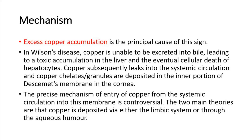In Wilson's disease, copper is unable to be excreted into bile, leading to a toxic accumulation in the liver and the eventual cellular death of hepatocytes. Copper subsequently leaks into the systemic circulation, and copper chelates or granules are deposited in the inner portion of Descemet's membrane in the cornea.